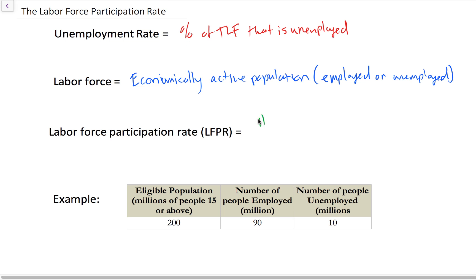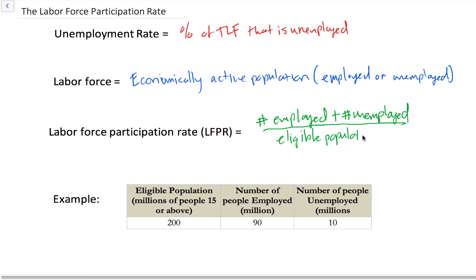The labor force participation rate is the percentage of the adult population in a country that is economically active. It is defined as the number of people employed plus the number of people unemployed, divided by the eligible population, which in most countries is age 16 and above. Not included in the eligible population are individuals who are institutionalized — such as those in prison — or in active duty military. So we're finding the total percentage of the eligible population that is economically active, which gives us the labor force participation rate.